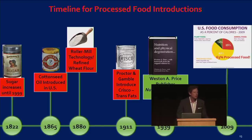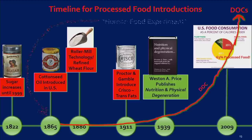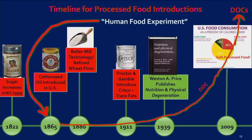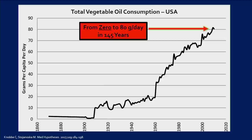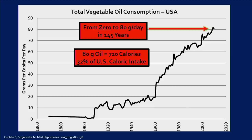By 2009, the USDA showed 63% of the American diet is made up of these four processed foods, and Diseases of Civilization are through the roof. But the human food experiment didn't begin in 1980 when we were told to go low-fat, and it didn't begin in the 1950s when saturated fat was vilified. It began right after the American Civil War, when the first vegetable oil was introduced. Total vegetable oil consumption rose from around 2 grams a day in the 1860s to 80 grams a day by 2010 — from zero to 80 grams in 145 years. That's 720 calories — 32% of U.S. caloric intake.